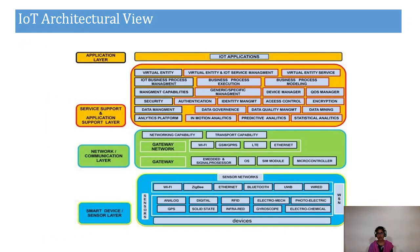This is the architectural view of IoT. It contains four layers: the sensor layer or smart device layer, the communication layer or network layer, the service support layer, and the application layer.